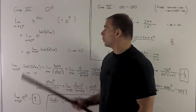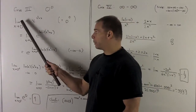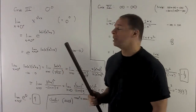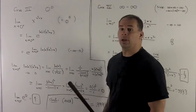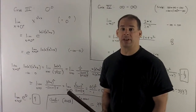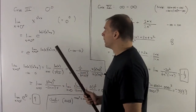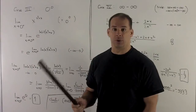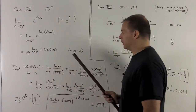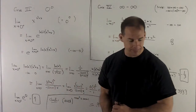For the next case, we consider limits of the form 0 to the 0th power. The example is: limit as x goes to 0 from the right of x raised to the (x² + x) power — definitely 0 to the 0. We'll use the same trick: replace x with e^(ln x), giving base e. By continuity of e^u, we can push the limit up into the exponent. Natural log of x as we go to 0 goes to minus infinity.